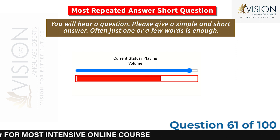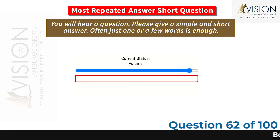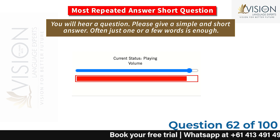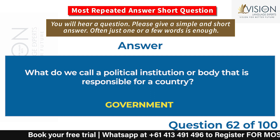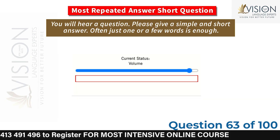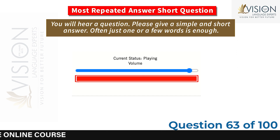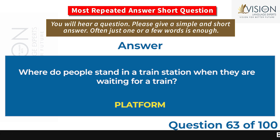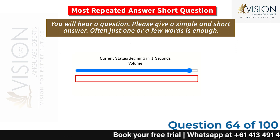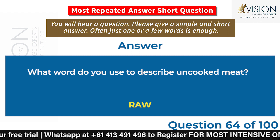What do we call a group of sheep or birds? Flock. What do we call a political institution or body that is responsible for a country? Government. Where do people stand in a train station when they are waiting for a train? Platform. What word do you use to describe uncooked meat? Raw.